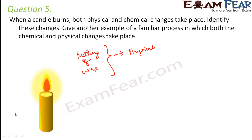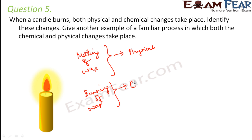So melting of wax is a physical change. Whereas during the same burning of a candle, some part of the wax is also actually burning — in that case, the wax is getting converted into new chemical substances. Heat and light are released, which indicates a chemical change.